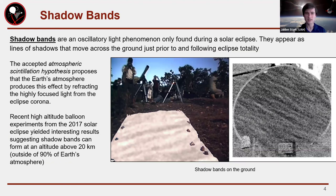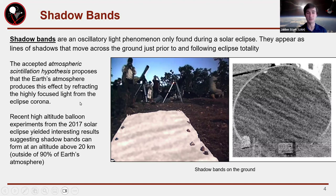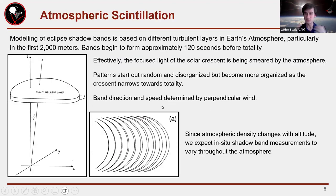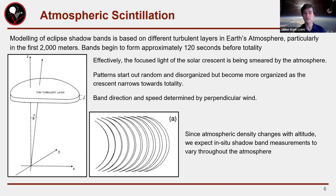Shadow bands — many of you might be familiar with this oscillatory visible light phenomenon associated with total solar eclipses. These are moving bands of light and shadow that cross the surface of Earth just prior to and just following eclipse totality. The main model is the atmospheric scintillation model, which proposes that turbulent layers in Earth's atmosphere are refracting the focused corona of the eclipse, smearing that corona shape across the surface of Earth.